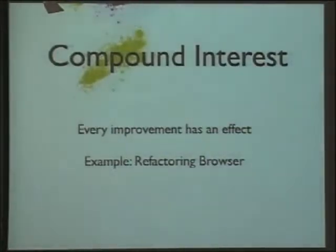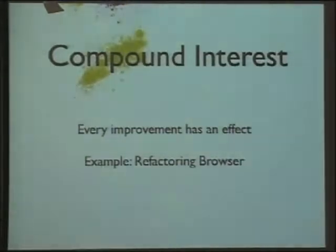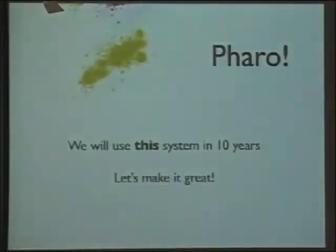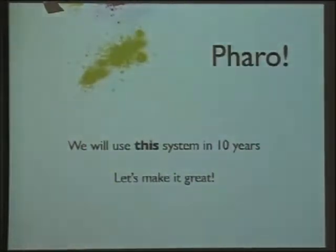Even if you look at the Refactoring Browser and think we've learned so much about refactoring since then and this isn't the perfect tool — it is still better to use the imperfect tool if it contributes to the whole story. If you have a refactoring tool, it gets much easier to improve it than if you don't have one at all. The idea is: we used this system ten years ago, we will most likely use it in ten years, so why don't we improve it constantly so we can actually build something great?